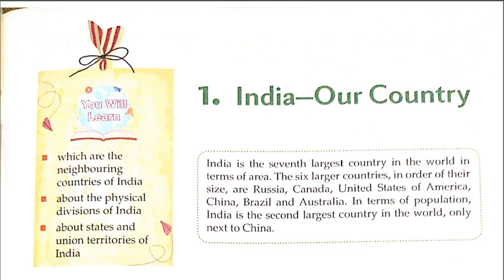The top 7 largest countries in order of size are: 1st Russia, 2nd Canada, 3rd United States of America, 4th China, 5th Brazil, 6th Australia, and then Bharat — India is the 7th largest country in the world.